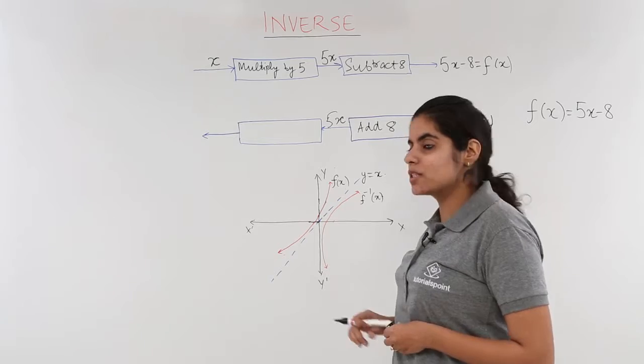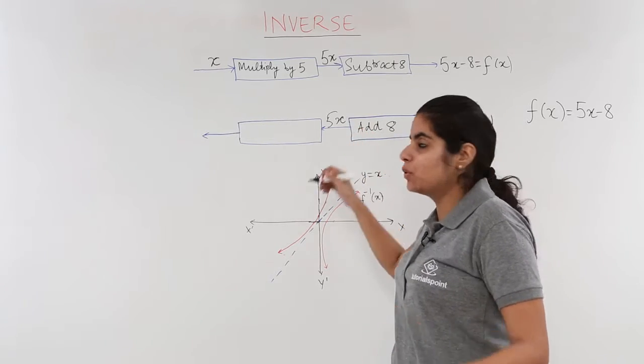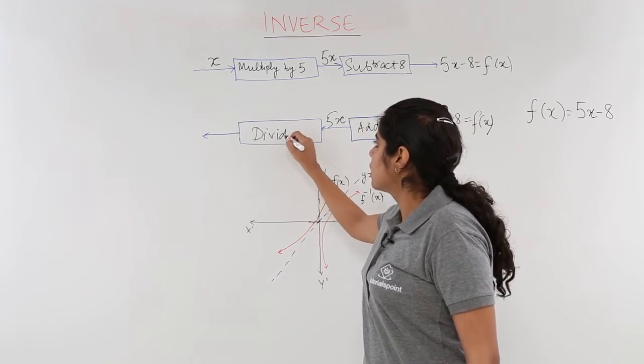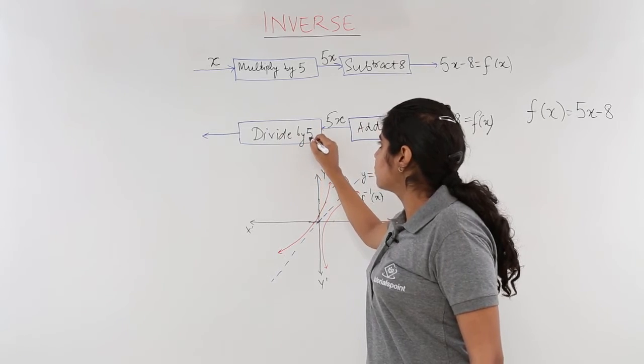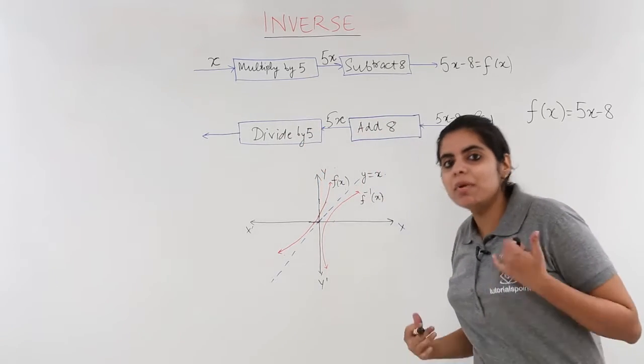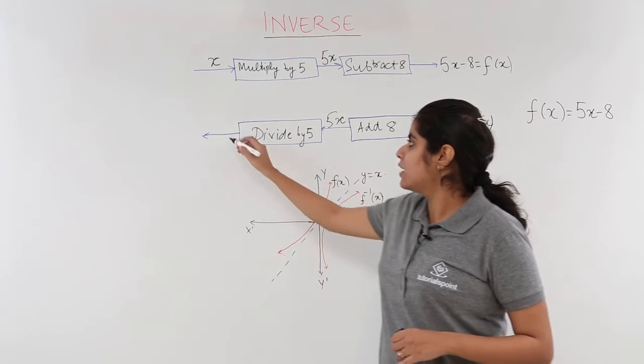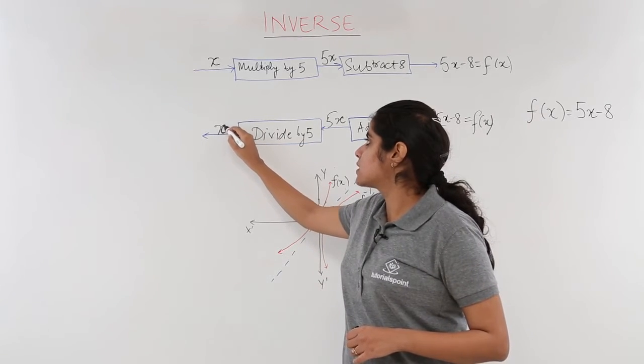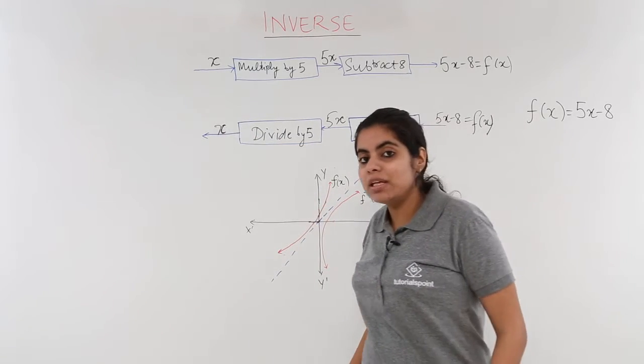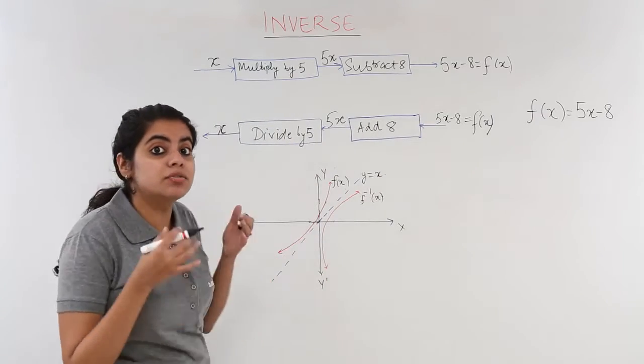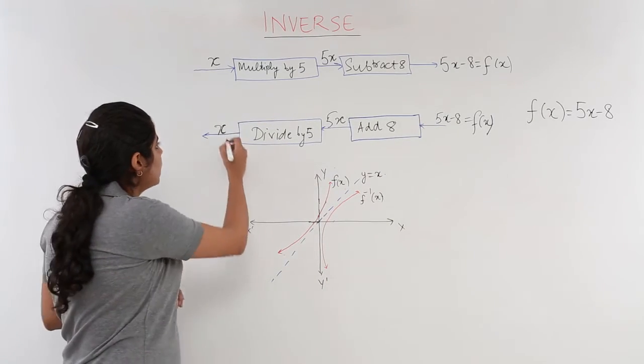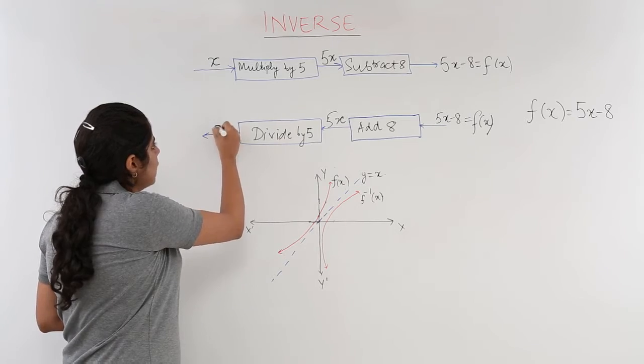Now this 5x should actually be converted only to x. How to make it possible? 5 is being multiplied, I have to divide. So I divide by 5. When I divide by 5 to 5x, I just get x. That means I started with something, that is the function, and I got what? I just got x.